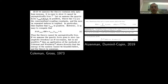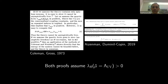The loophole is that both proofs — by Coleman and Gross, and by Aizenman and Duminil-Copin — explicitly assume that the coupling constant at the lattice or cutoff scale is positive. This seems like a perfectly natural assumption and is clearly stated in both proofs. Under this assumption, you cannot have asymptotic freedom and you do get quantum triviality for scalar theories.